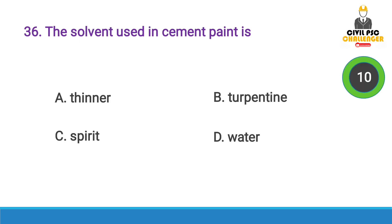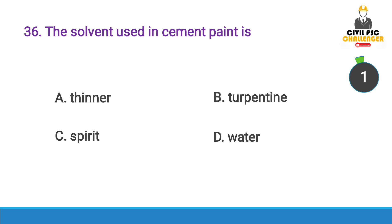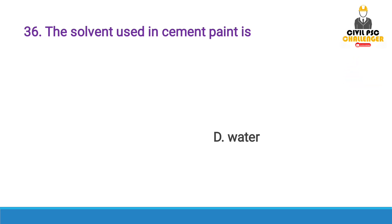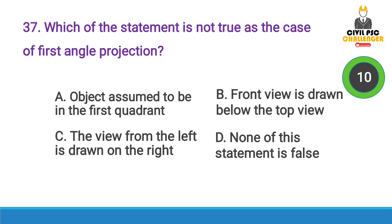Next question: The solvent used in cement paint is — Answer option D, Water.